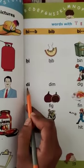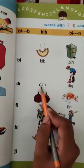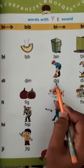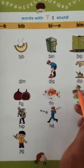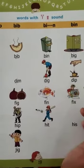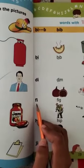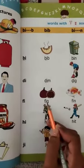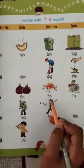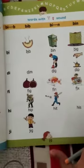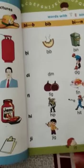Now see: D-E-D. So: Dim, Dig, Dip. Okay. Now see: F-E, Fee. So: Fig, Fin, and Fix.